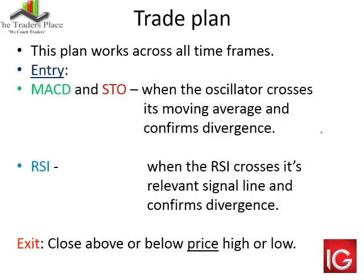To put some detail into a trading plan: we trade this across all timeframes. Entry uses a MACD and stochastic — when the oscillator crosses its moving average, that confirms the divergence. We can see where the MACD has made a higher low while the price made a lower low, and the MACD crosses above its signal line — that nine-period moving average. Just because the oscillator has ticked up or down doesn't confirm; we have to wait for that moving average. With the stochastic I normally use a 10,3,3 — three smoothing plus a three moving average. The stochastic turns and closes above or below its average in the direction of the divergence.